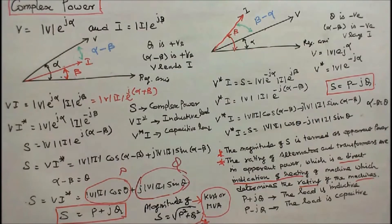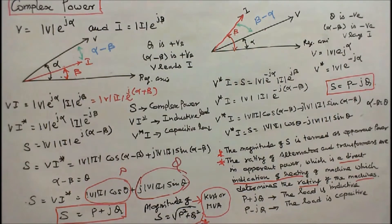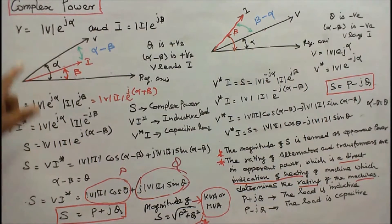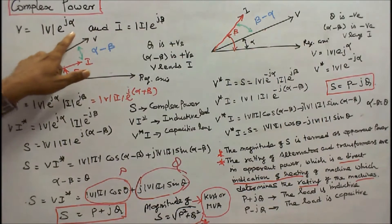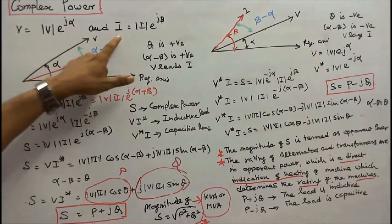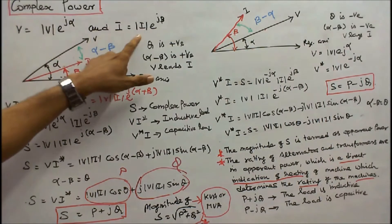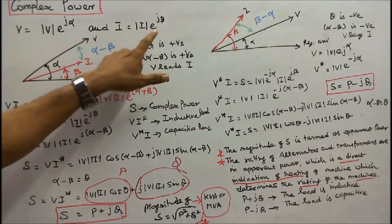This class we discuss about complex power and power factor. Consider a single phase network. We can represent voltage and current in exponential form. Let V equal to modulus of V times e to the power j-alpha, and I equal to modulus of I times e to the power j-beta.